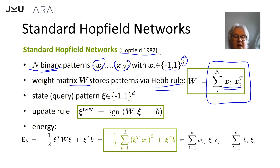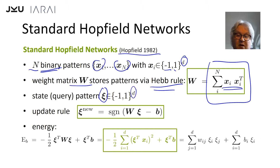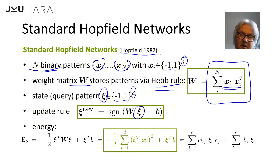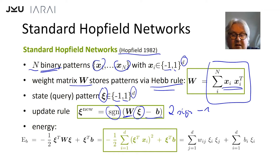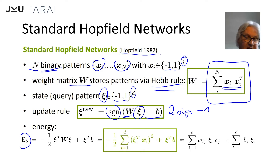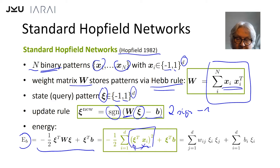You construct this weight matrix, and then you have a query pattern which should retrieve one of the stored patterns. The query pattern is also a d-dimensional vector with components either minus one or plus one, and with this query pattern you do an iterative update: the state pattern is multiplied by the weight matrix W, a constant vector is subtracted, and then the sign is taken — actually it's two times sign minus one — to get again a vector with components minus one and plus one. This update rule minimizes the energy function. The energy function contains the dot product between the state pattern ξ and some stored pattern x_i, squared, summed over all patterns.